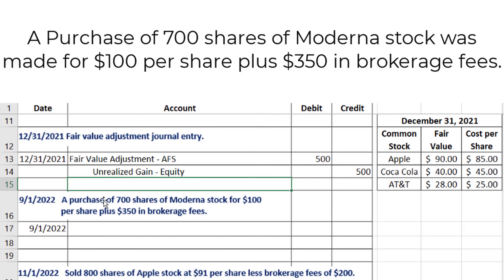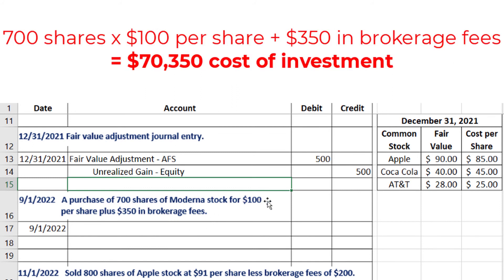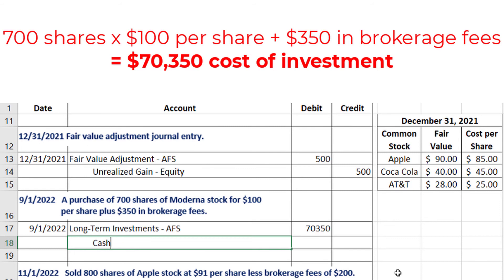Next, on September 1, 2022, there was a purchase of 700 shares of Moderna stock for $100 per share plus $350 in brokerage fees. The brokerage fees are included in the cost of the investment. So we take 700 shares multiplied by $100 per share, plus $350, giving us a debit to long-term investments AFS for $70,350, and a credit to cash for $70,350.